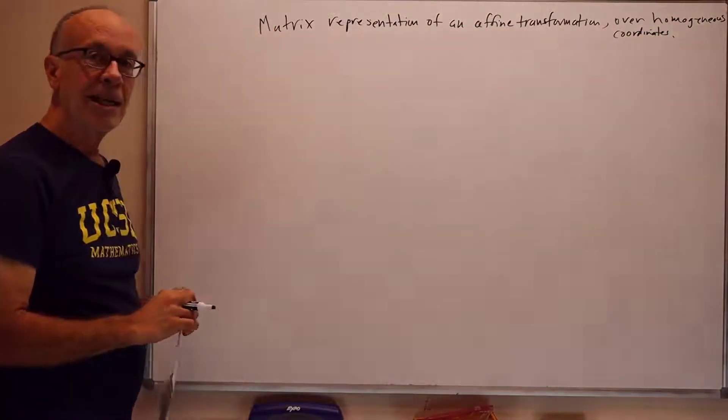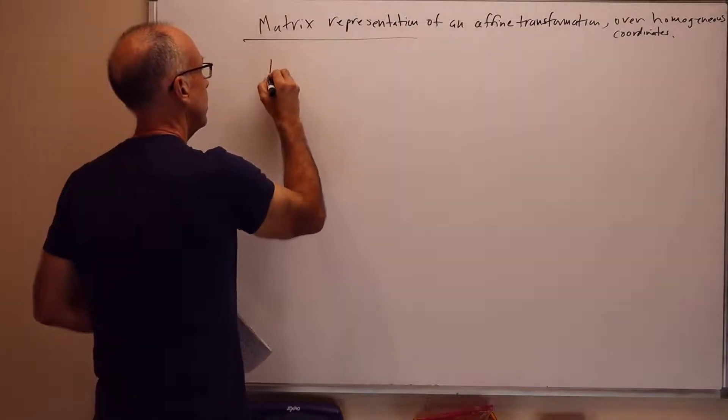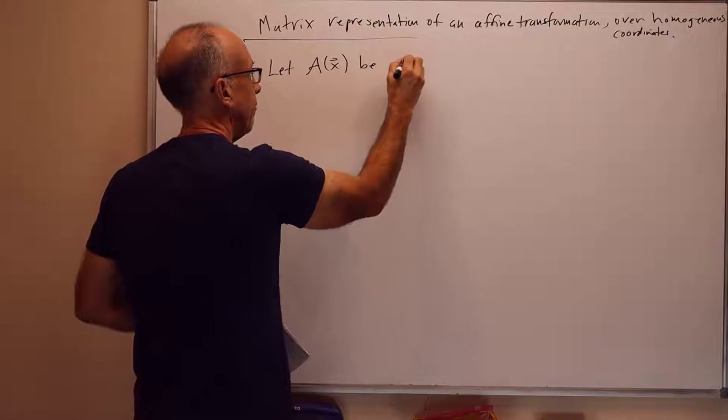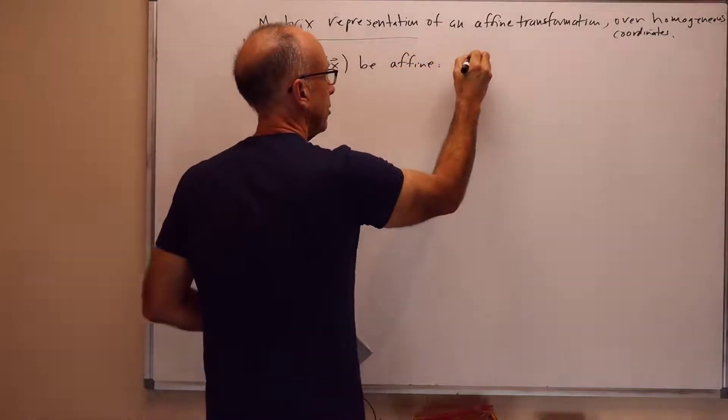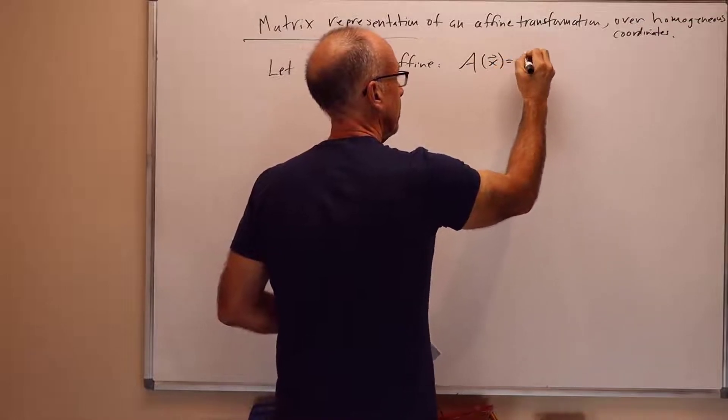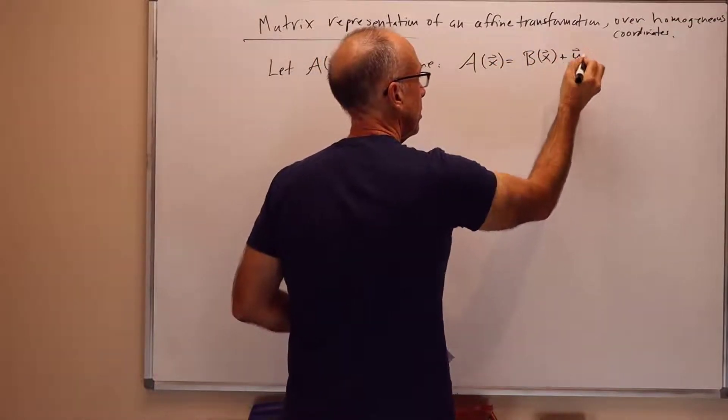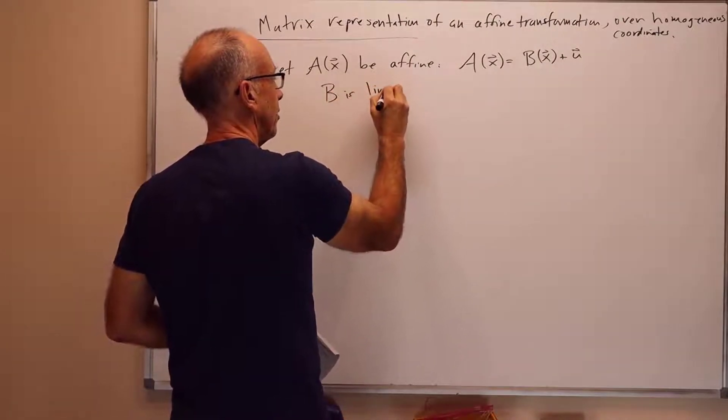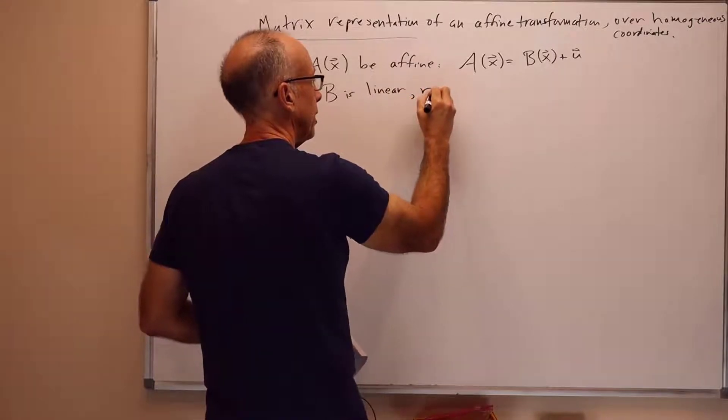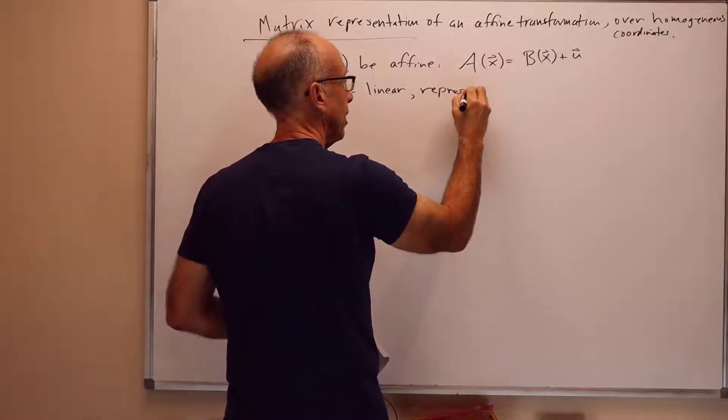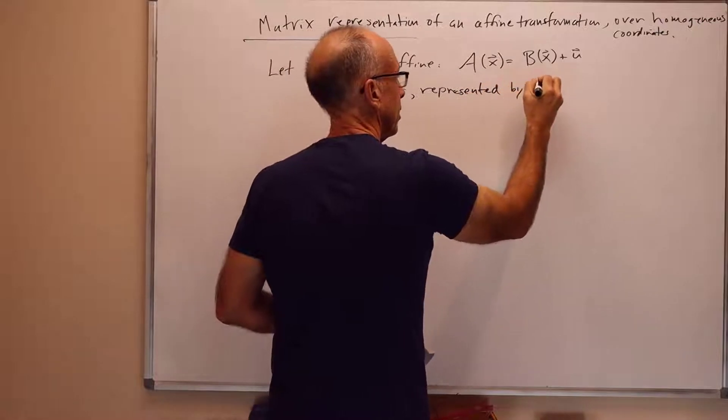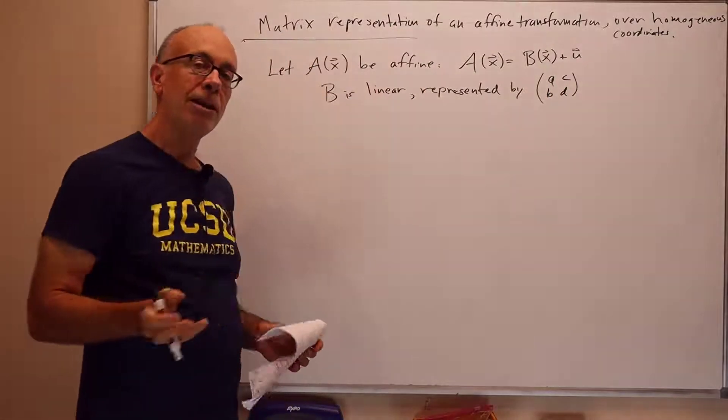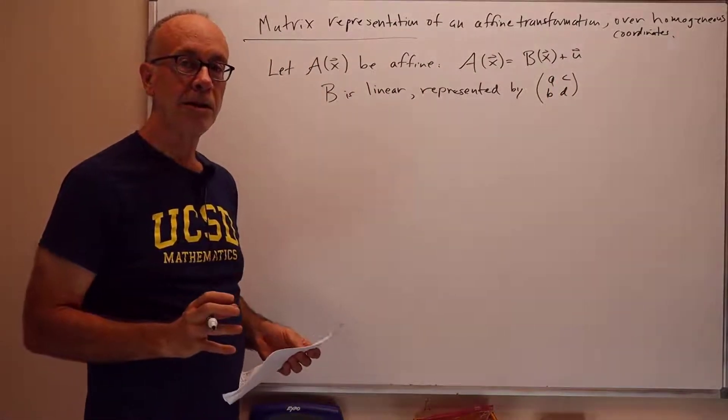So, let's just write this out, we'll see what happens here. Let's let A of x be an affine transformation. So, in particular, A of x is equal to B of x plus u, where B is linear, it's a linear transformation. And, say, represented by a 2 by 2 matrix, so it'll be represented by some matrix, which I'll just call ABCD, which is a 2 by 2 matrix representing the linear map, as we discussed earlier, over R2.